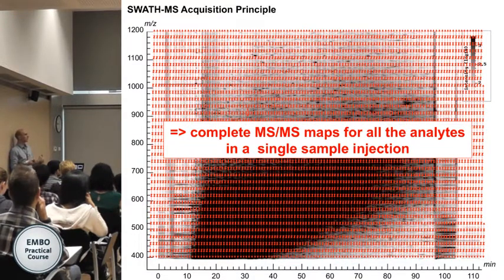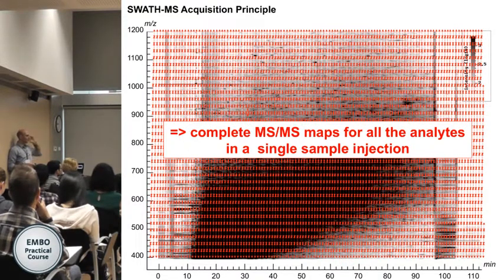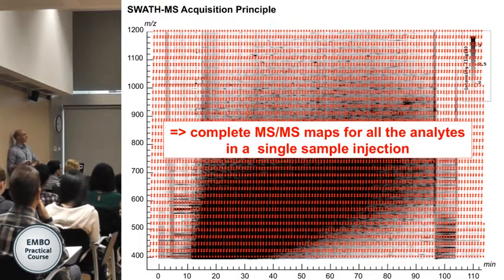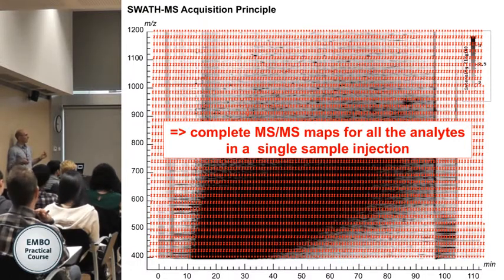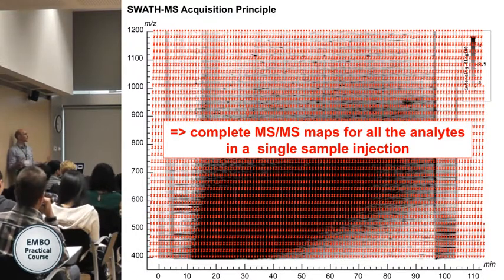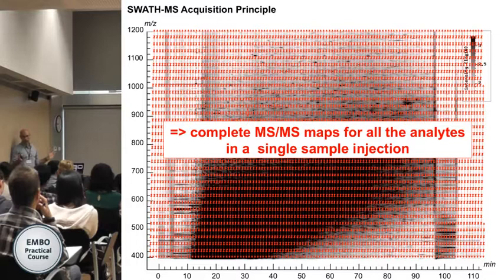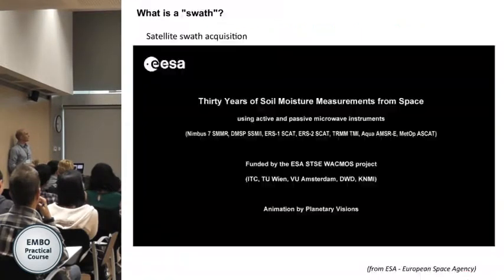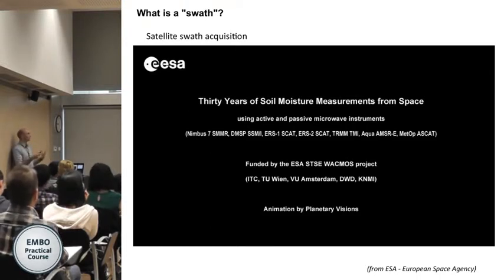So you basically get MS/MS information for all possible detectable species in a single sample injection. This is what makes these methods 'data-independent acquisition' — the machine doesn't decide based on the intensity of the peptides. It's forced to pick the entire mass range over and over across the chromatogram. All DIA methods share this property: you acquire MS/MS of everything across the chromatogram, regardless of whether you first check for the existence of a precursor.